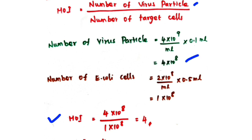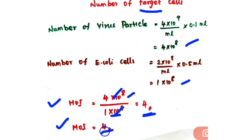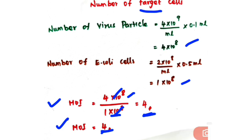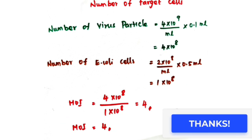MOI equals number of virus particles divided by number of target cells: 4 × 10⁸ divided by 1 × 10⁸. The 10⁸ cancels out, giving 4 ÷ 1 = 4. So MOI equals 4. Thank you for watching — if you like my videos, please like, share, and subscribe.